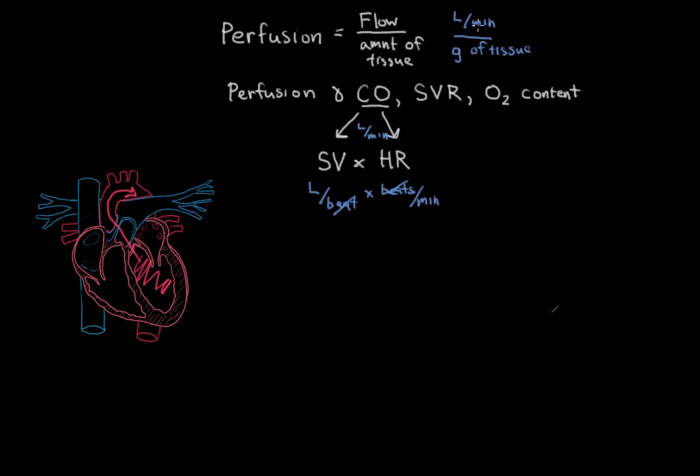And you can see in our equation up here, flow has a similar unit, liters per minute. So cardiac output really determines the flow of the blood. The more the heart squeezes to push blood out, and the faster it does this, leads to increased cardiac output. And therefore this leads to increased perfusion of the body. So a better pump leads to better delivery of oxygen to the tissues.